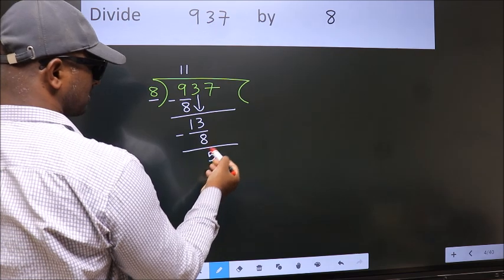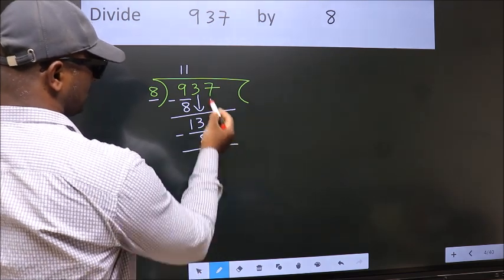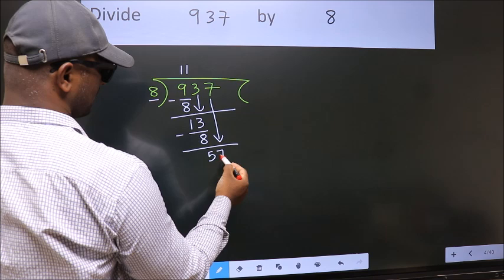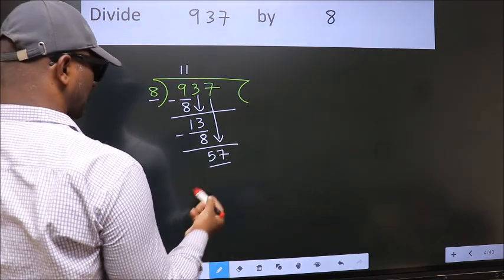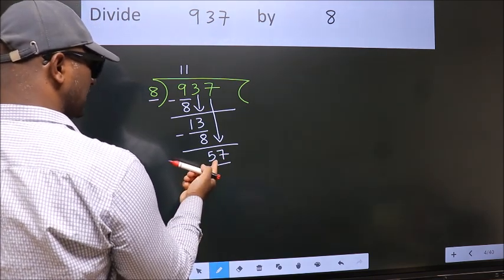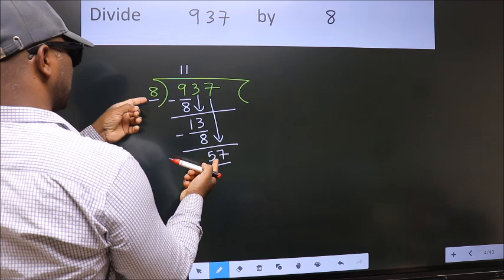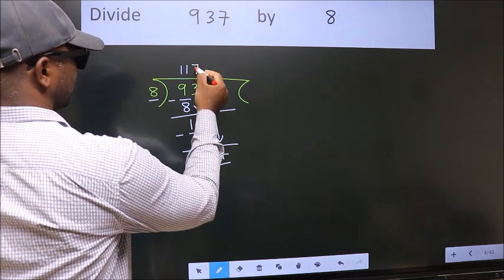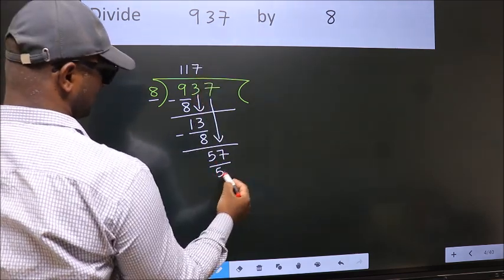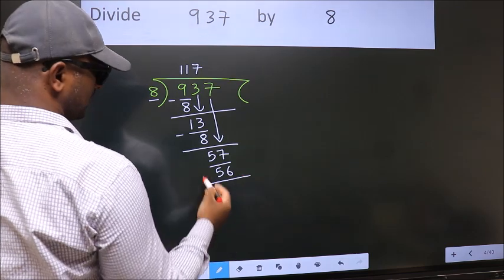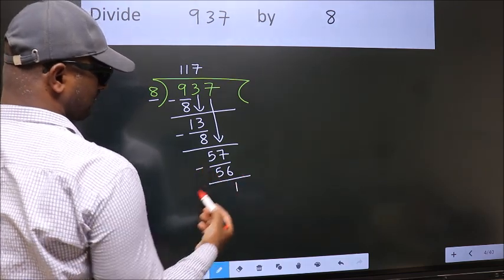After this, bring down the beside number. So 7 down. So 57. A number close to 57 in 8 table is 8 7s 56. Now we subtract. We get 1.